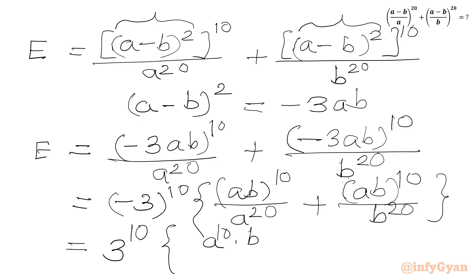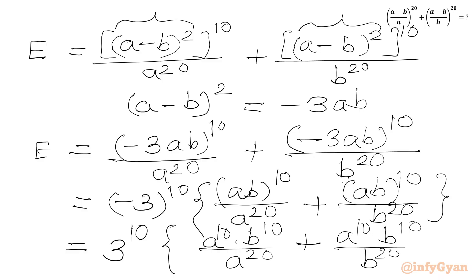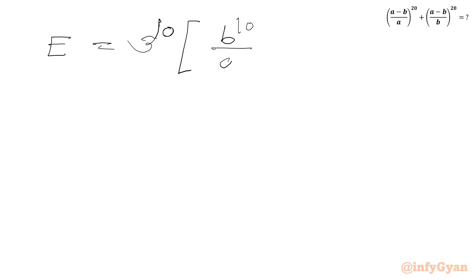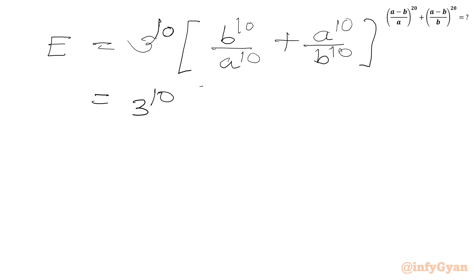So we can write a¹⁰ × b¹⁰ / a²⁰ plus a¹⁰ × b¹⁰ / b²⁰. Using the exponent law, a¹⁰ in the numerator and a²⁰ in the denominator gives a¹⁰ only in the denominator. So E = 3¹⁰ × (b¹⁰/a¹⁰ + a¹⁰/b¹⁰), or 3¹⁰ × ((b/a)¹⁰ + (a/b)¹⁰).